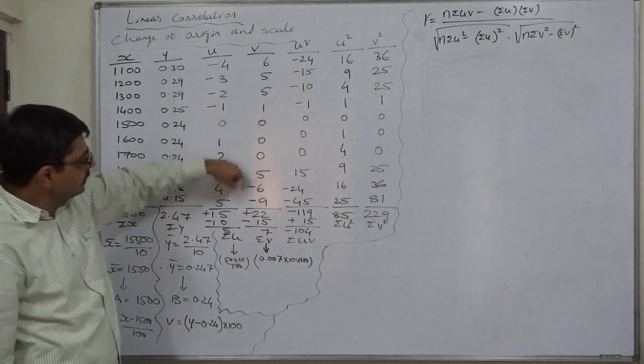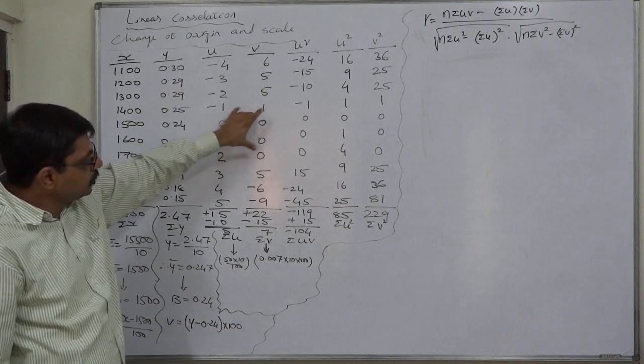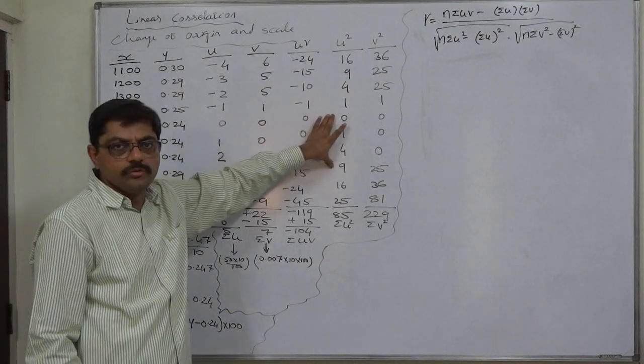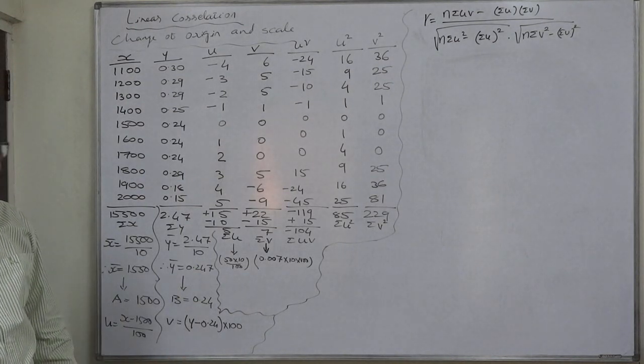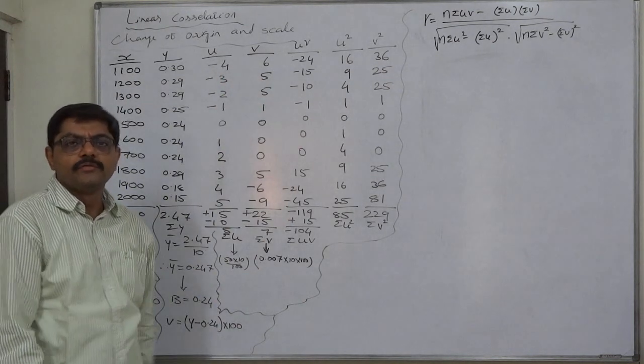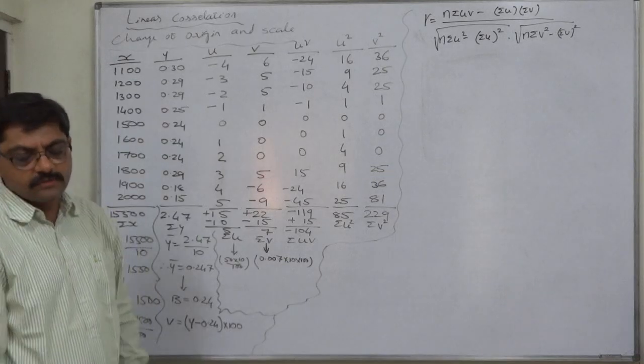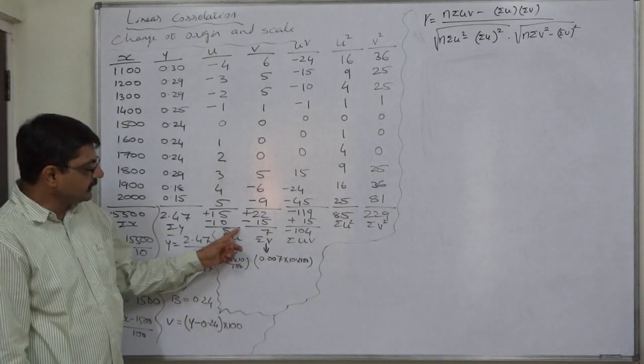If there is any mistake in this column of u or v, you will have wrong uv, wrong u square, or wrong v square. And all the data will ultimately be wrong, and the final value of the coefficient of correlation will also be wrong. So always check these two totals.